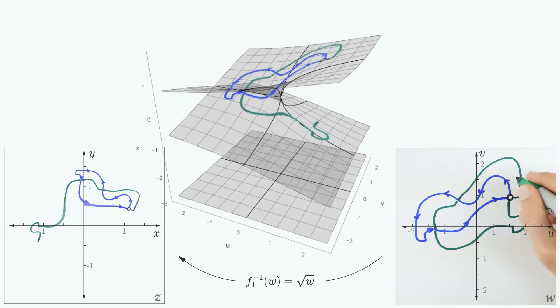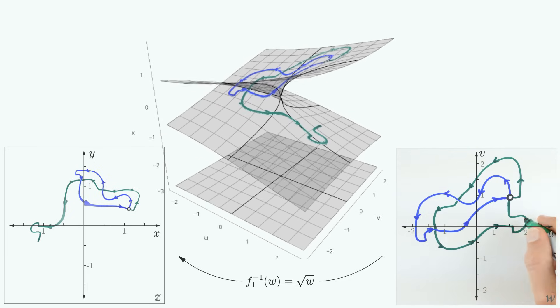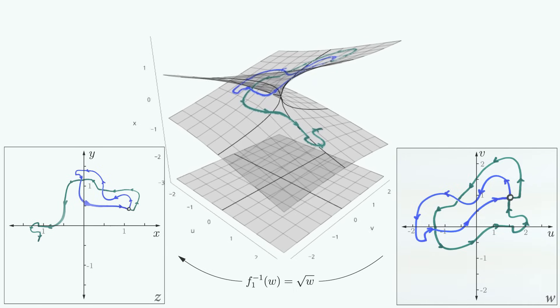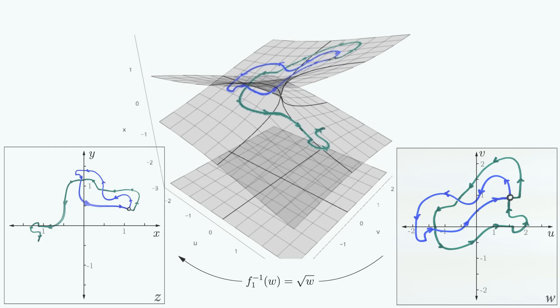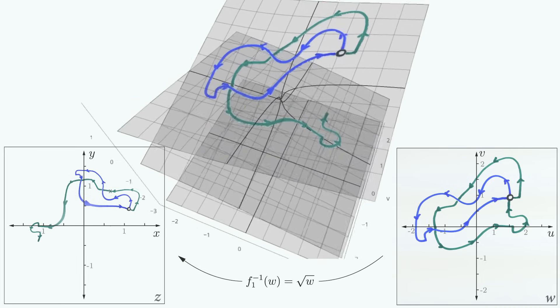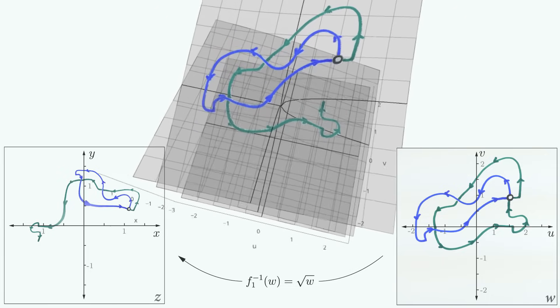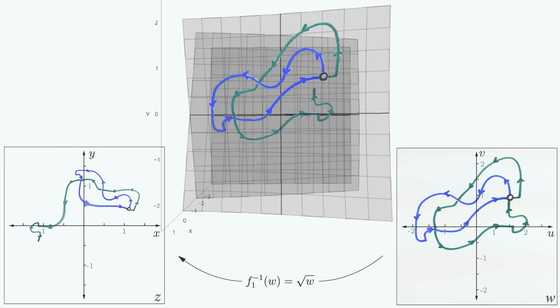So why does our green path start out in one location on our Z plane only to end up in another? Simply because our green path leads us to the other layer of our surface. From the perspective of our W plane, it appears that we've returned exactly to our starting point. But actually, we haven't. The W plane is just a projection, a shadow. In reality, our path has led us to a completely different branch of our function, with different Z values.